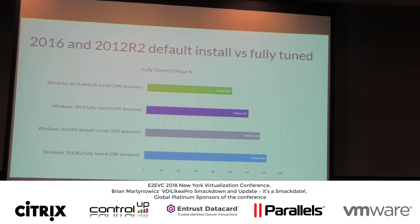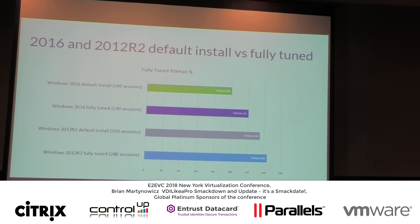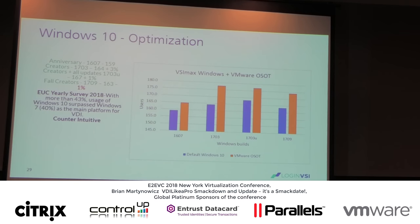We did the same practice with 2012 R2 as well. We ran more sessions in the last test to find our VSI max number. A fully tuned Server 2012 host gives us a VSI max of 264, versus a default install of 248. There is a significant difference between server versions, and there is a lot to gain even from tuning 2012 R2.